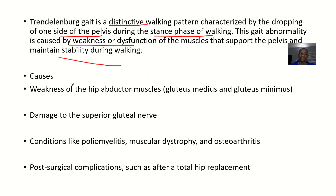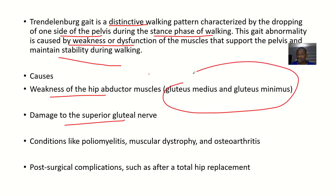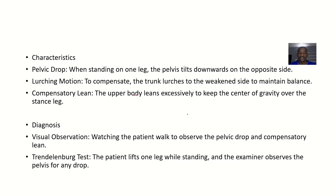The causes include weakness of the hip abductor muscles such as the gluteus medius and gluteus minimus. It could also be due to damage to the superior gluteal nerve, which supplies these muscles, causing them not to function correctly. Conditions like poliomyelitis, muscular dystrophy, and osteoarthritis can also be responsible.